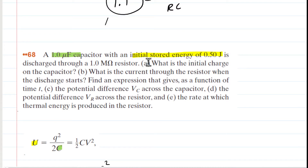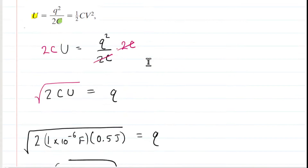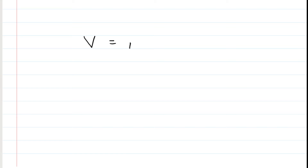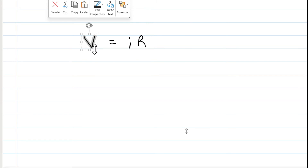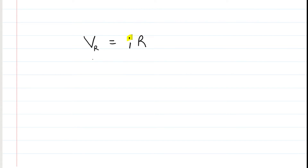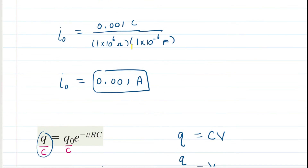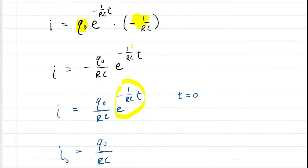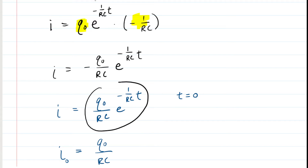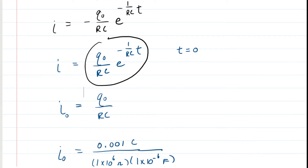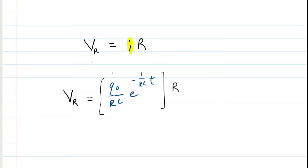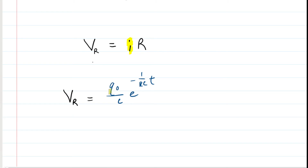Part D asks for the expression for the potential difference V_R across the resistor as a function of time. By Ohm's law, the potential difference across a resistor equals the current multiplied by the resistance. Substituting the current expression developed earlier, we have a resistance in the denominator and multiply by resistance in the numerator — those cancel out. Filling in the initial charge, capacitance, and resistance values.